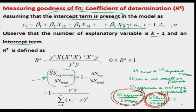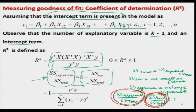If you remember you had obtained the expression for SS regression and SS total, and using those components you can get the expression for R². The same quantity can also be expressed as 1 minus SS residual divided by SS total. Replacing the values of SS total, you can obtain the expression. Here y'y is expressed as the summation of (yᵢ − ȳ)², because that is your sum of squares total — you are centering the observations. The value of R² will lie between 0 and 1.